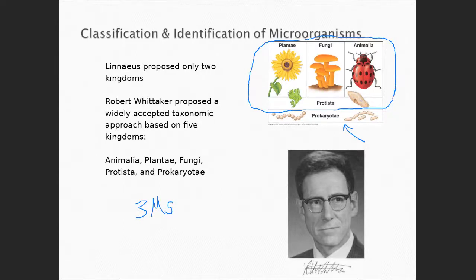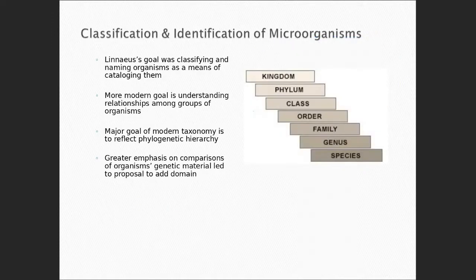This is what Robert Whittaker did — he put organisms into these kingdoms, concentrating on the eukaryotes because that's what people were studying mostly. He put them into different categories by morphology and metabolism. Molecular techniques came a little bit later. That stayed for a while, and we still didn't have that upper part of the hierarchy. Does anybody remember what that upper part is? A domain.